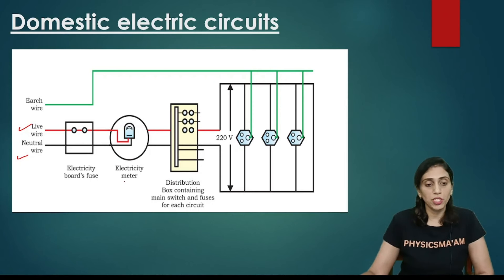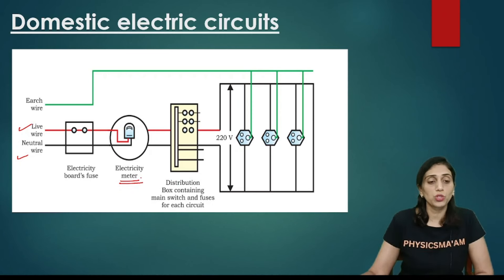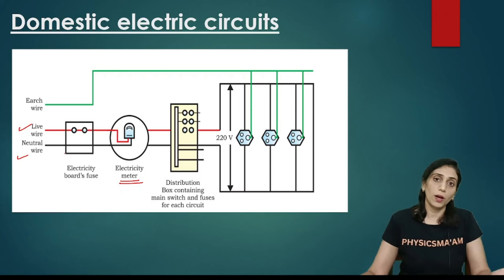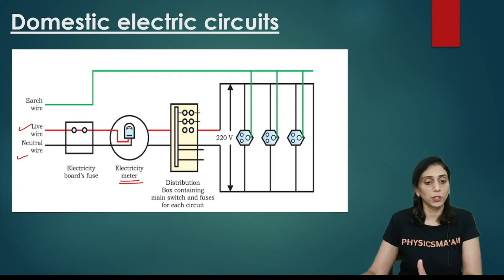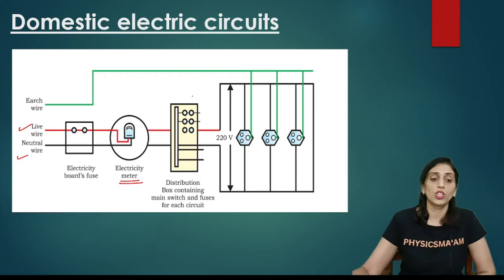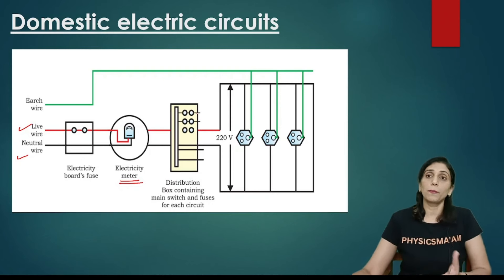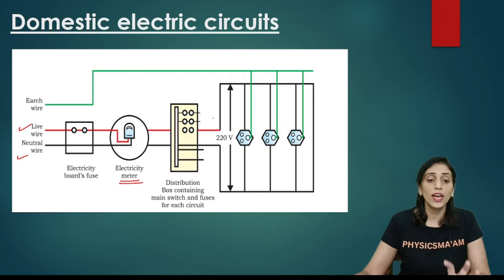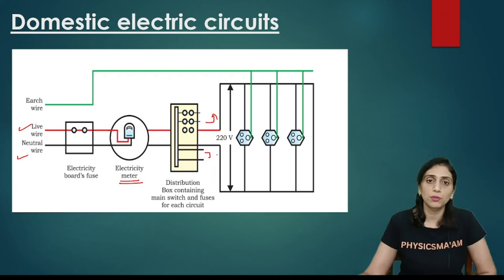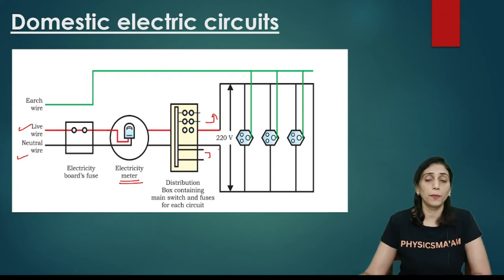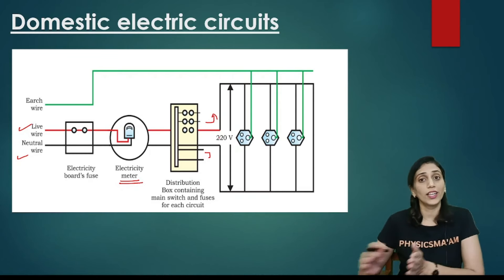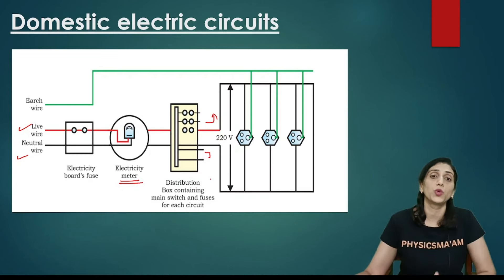Then it goes to your energy meter, which counts how many units you are using per month, and according to that we get our bill. So after the company fuse, connection goes to the energy meter. Then it goes to your distribution box — from the distribution box there is your main switch, and then from there it goes to different circuits for different rooms. Each and every appliance or device you are using in your house will have a separate switch. Their connection is separate; these days MCBs are also used.